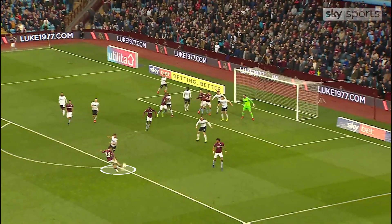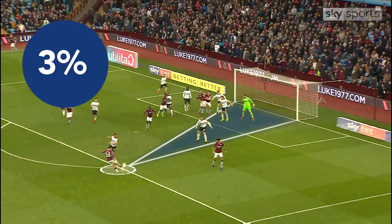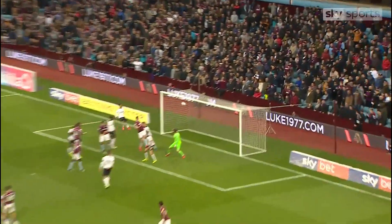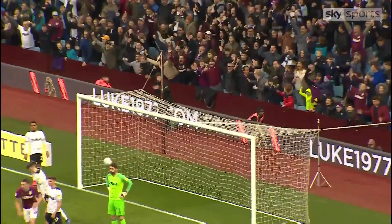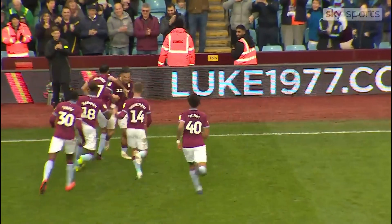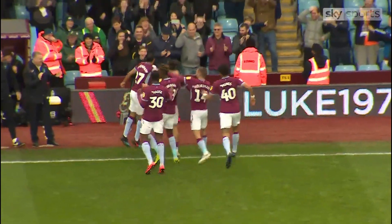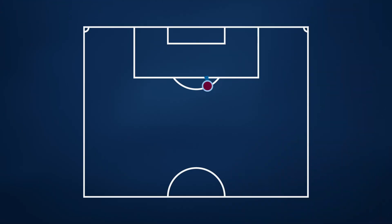For example, here's Jack Grealish about to take an audacious effort from long range. What are you doing Jack? You've only got a 3% chance of scoring from there. We expect an average player to score that Jack Grealish goal about 3% of the time, so the XG value for the shot is 0.03.